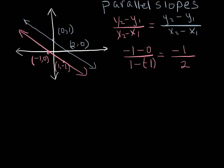And let's figure out the slope of the blue line. So we have 0 minus 1 divided by 2 minus 0 and that gives us a slope of negative 1 over 2. Ah, negative 1/2.